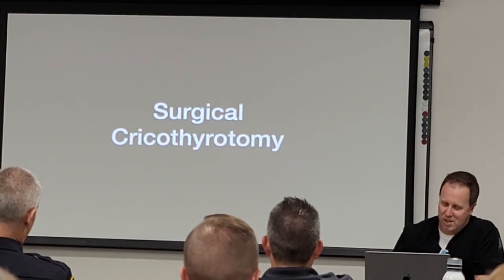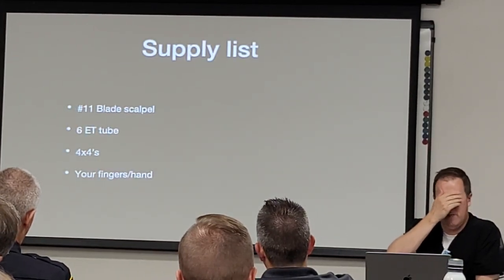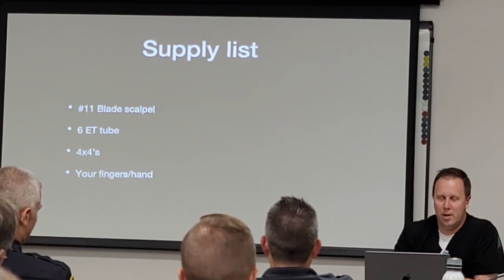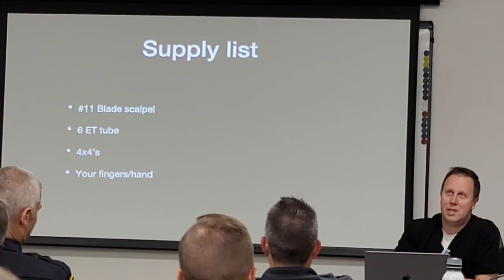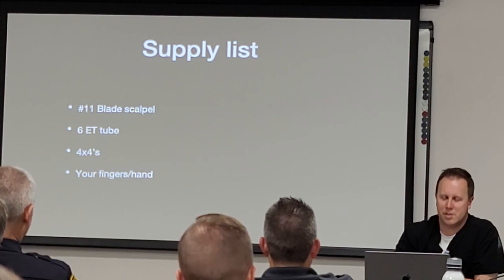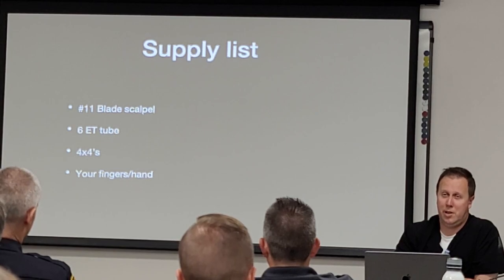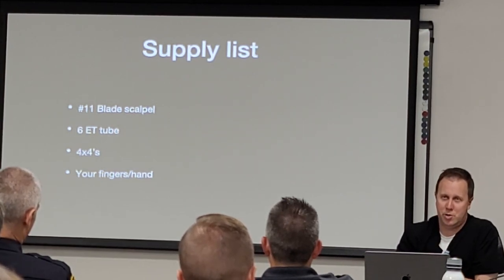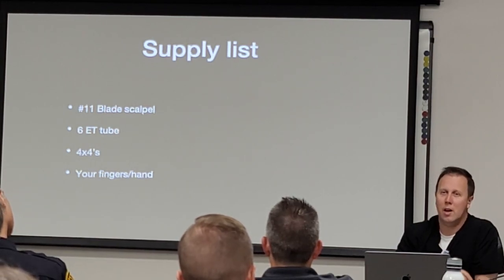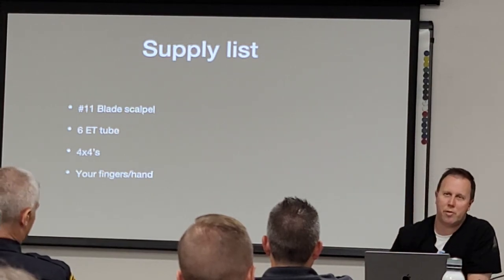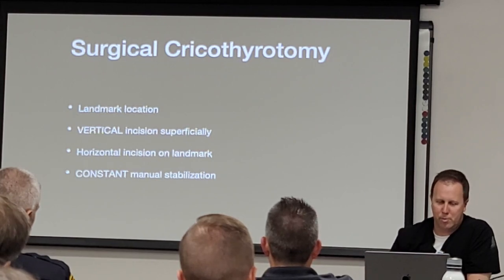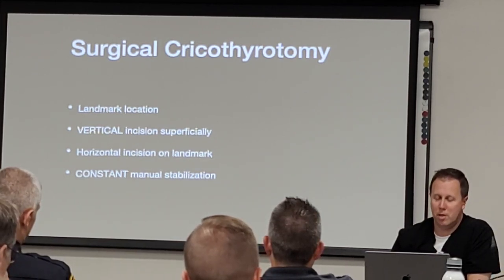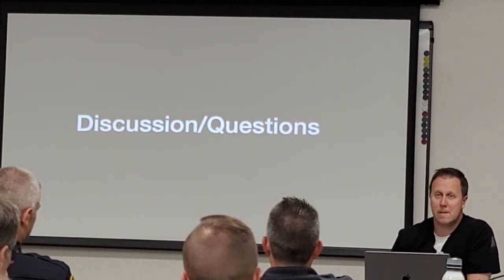For the surgical crike today we're going to use 11 blades and we have four crike templates. In reality you're going to use whatever knife you have available. You can use whatever size ET tube you have; today we'll talk about using fours and I have a couple of sixes. Four-by-fours and your finger — that's what you need. A pair of scissors would be great too because once you're done you're going to cut that tube much shorter to be able to secure it. Then we'll go down to the lab, talk about where we make our incisions on the pigs, and proceed.